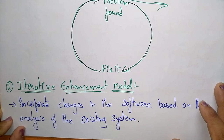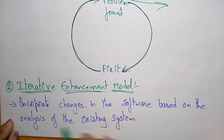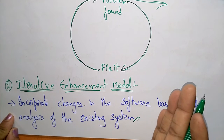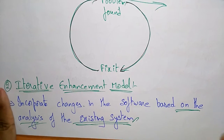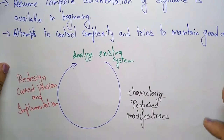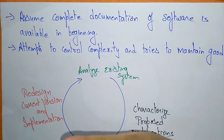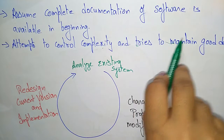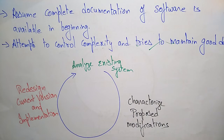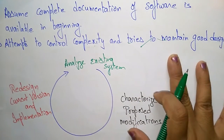The next model is the iterative enhancement model. The iterative enhancement model incorporates changes in the software based on the analysis of the existing system. It assumes that the complete documentation of the software is available at the beginning, and it attempts to control complexity and maintain good design.